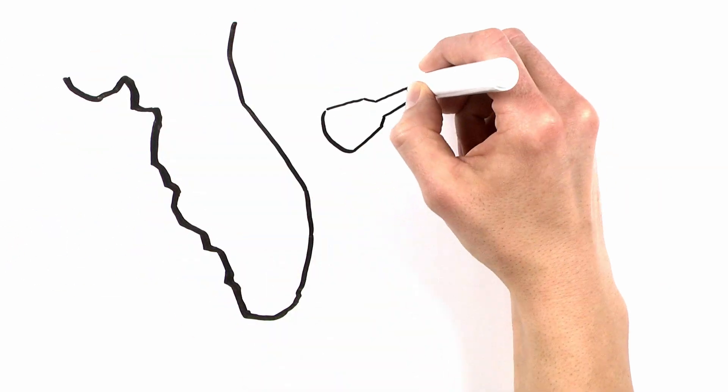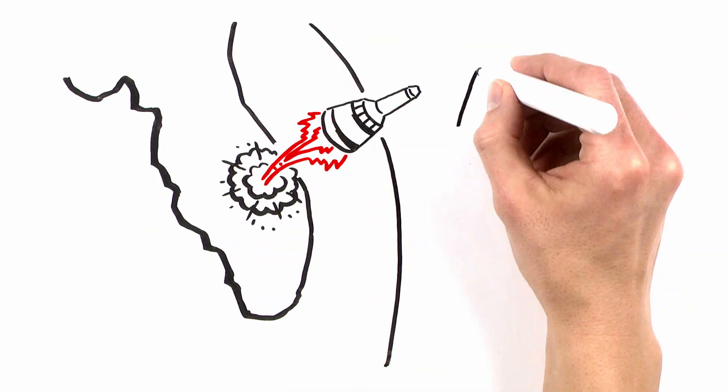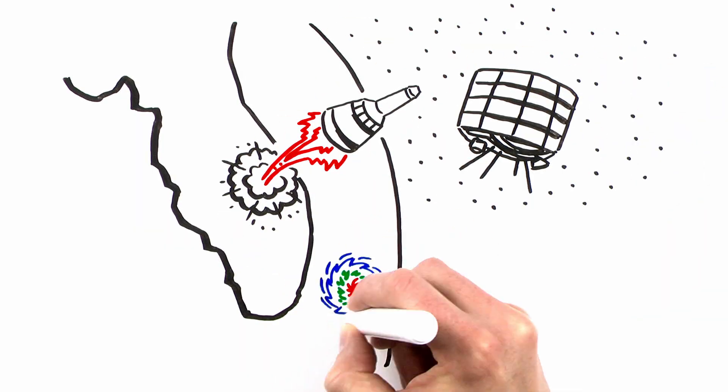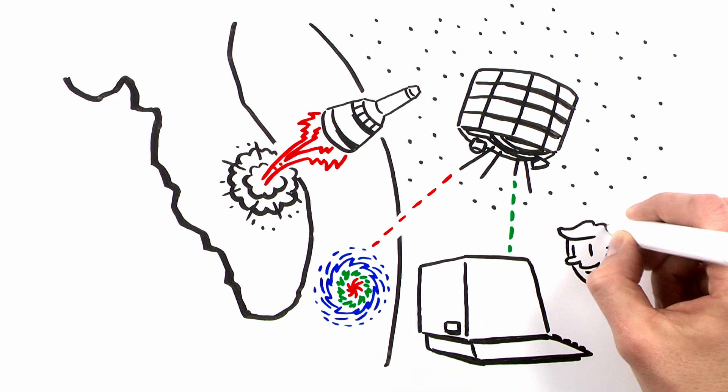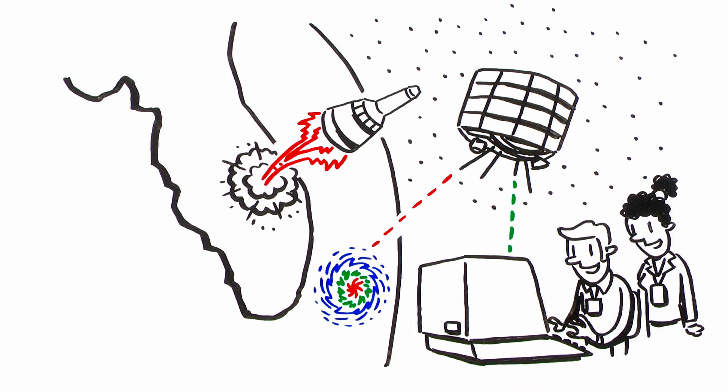Just three years after the space age began, NASA launched the first satellite to monitor Earth's weather. It was the beginning of a revolution in weather forecasting and laid the foundation for the global study of Earth.